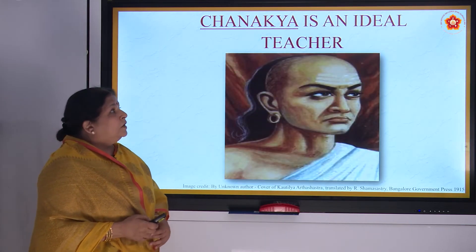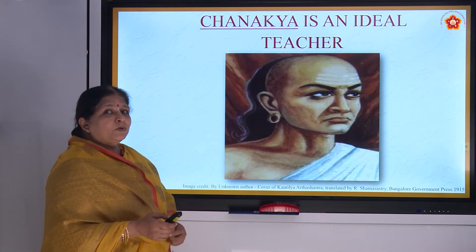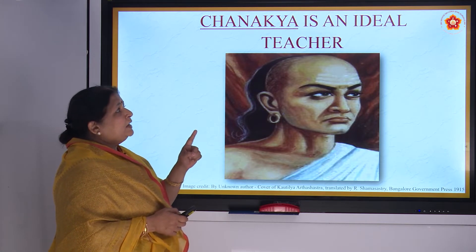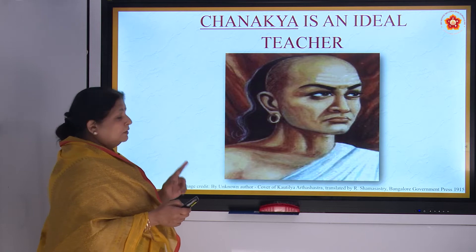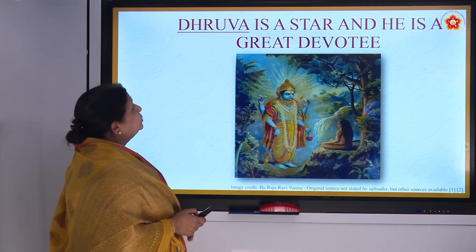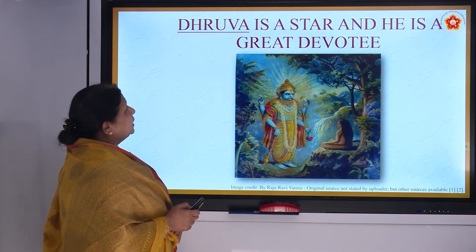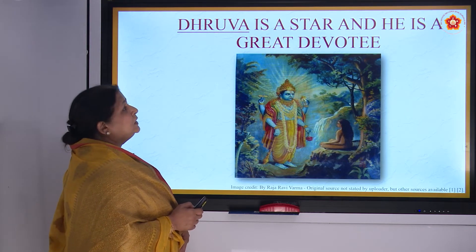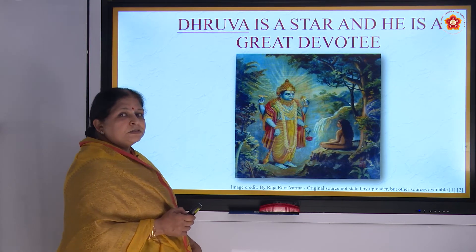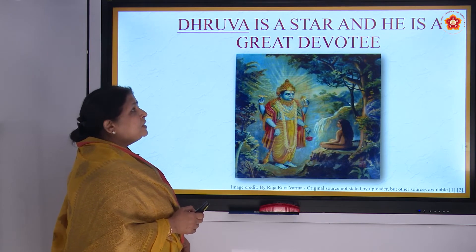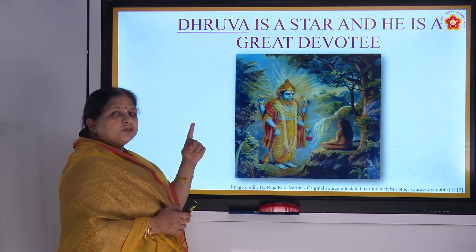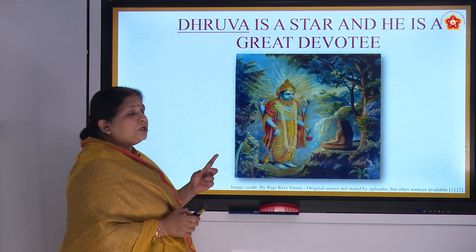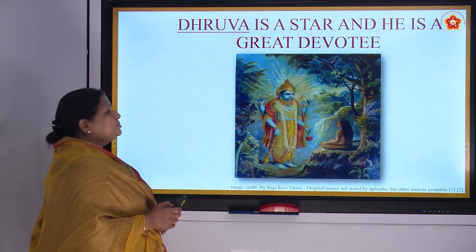C — Chanakya is an ideal teacher. D — Dhruva is a star and he is a great devotee of Lord Vishnu — Dhruva Nakshatra. E — Ekalabhya is a great devotee to Guru Dronacharya; he had given his thumb as his Guru Dakshina.